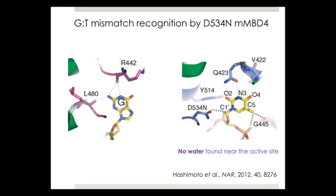Here is the X-ray structure published by another group. The backbone carbonyl of an amino acid residue recognizes the estranged guanine, the substrate thymine is involved in multiple hydrogen bonds, and there is the catalytic aspartate residue. In this structure, they could not observe a water molecule, which is observed in many other DNA glycosylases.